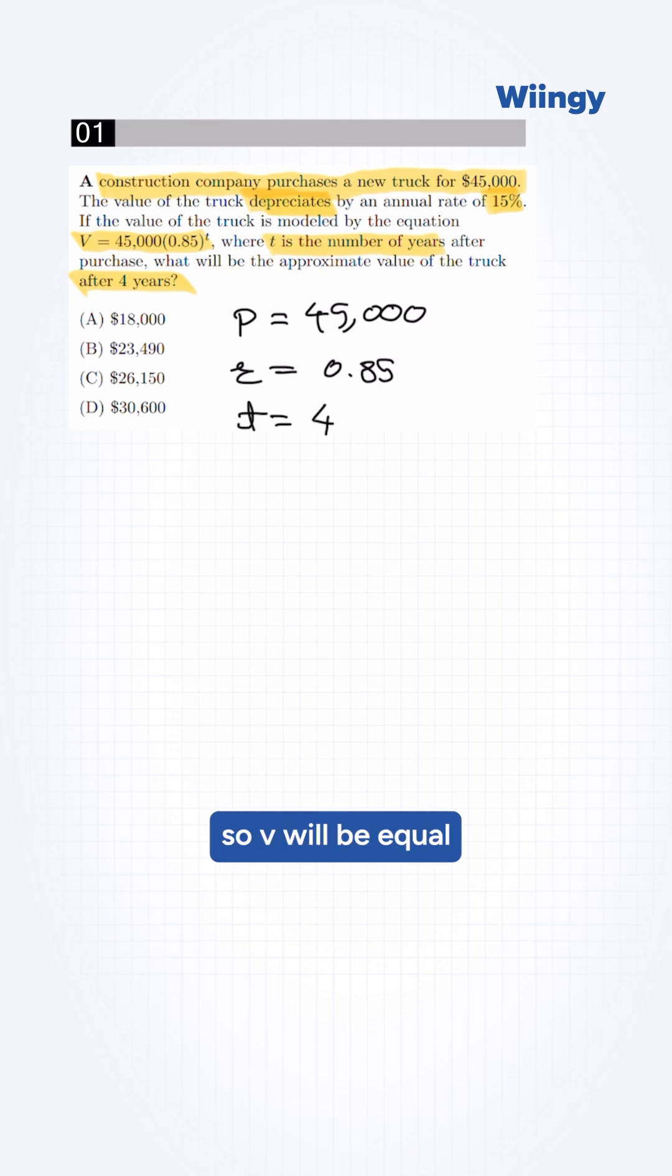Now we set up the equation. So v will be equal to 45,000 into 0.85 raised to the power of 4.